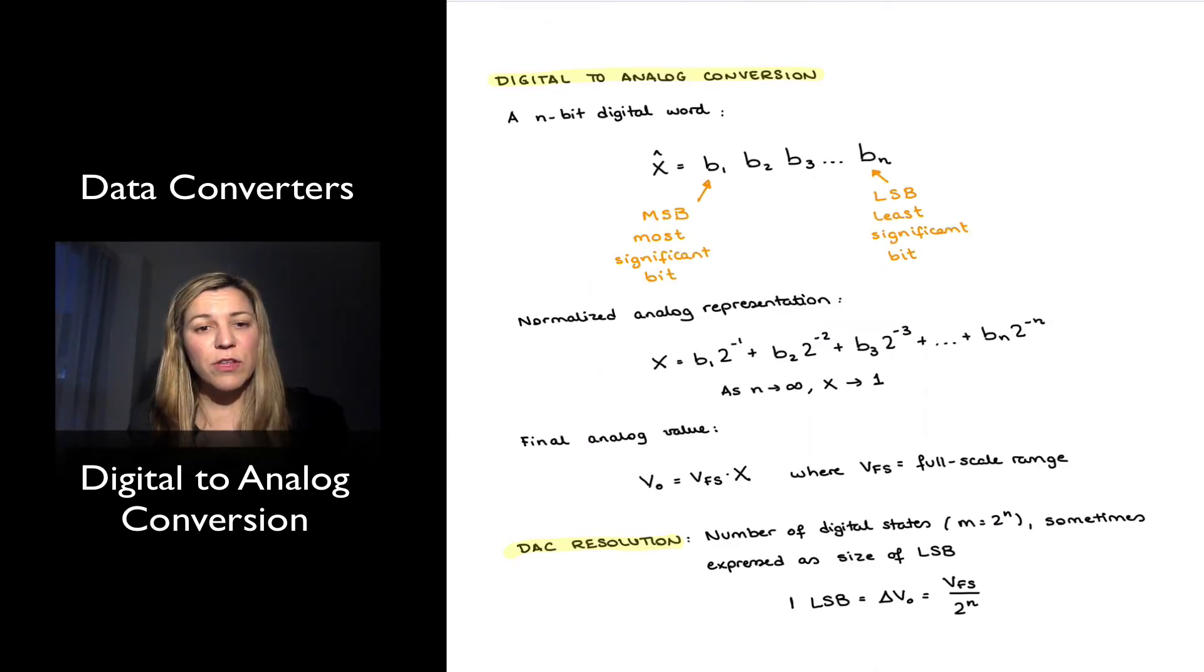We can also take a closer look at some of the parameters and the key concepts that surround the digital to analog conversion process. And first thing, notice that an n-bit digital word is typically represented as a sequence of bits or binary digits. So I represented my digital word x hat as a sequence of bits b1, b2, b3, all the way to bn.